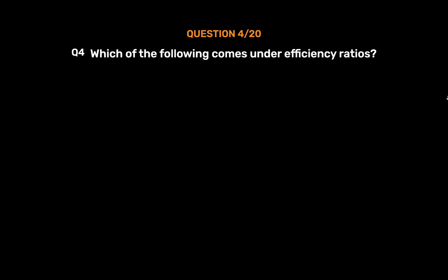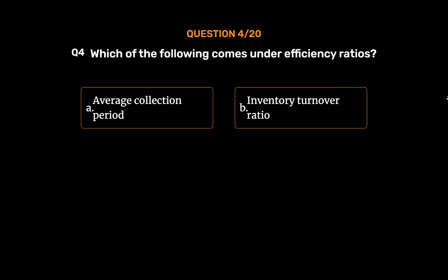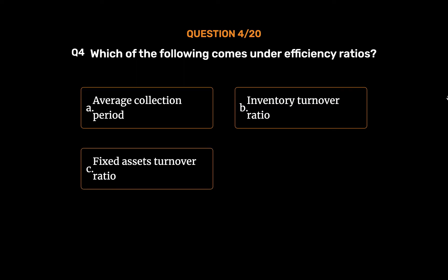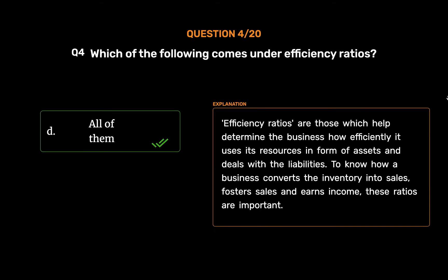Question number 4. Which of the following comes under efficiency ratios? Option A: Average Collection Period. Option B: Inventory Turnover Ratio. Option C: Fixed Assets Turnover Ratio. Option D: All of them. The correct answer is Option D: All of them. Efficiency ratios help determine how efficiently a business uses its resources in the form of assets and deals with liabilities, and how it converts inventory into sales to earn income.